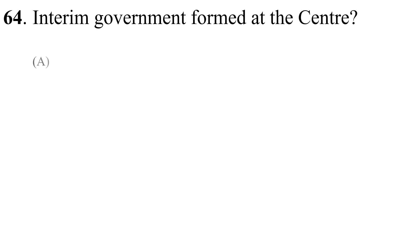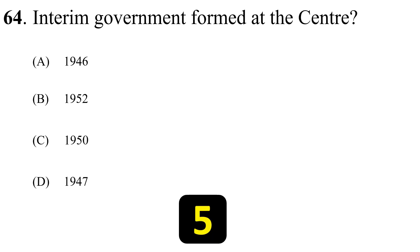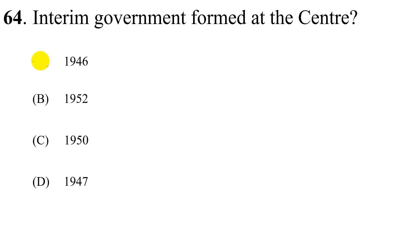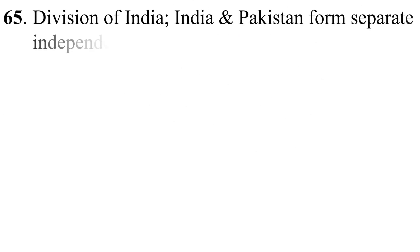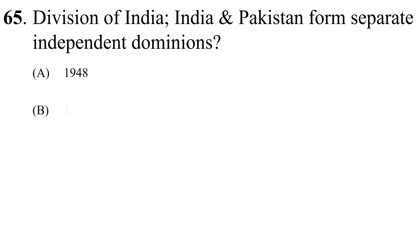Question number sixty-four: Interim government formed at the centre. Question number sixty-five: Division of India — India and Pakistan formed separate independent dominions.